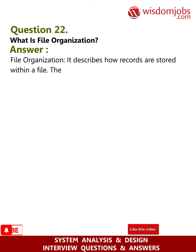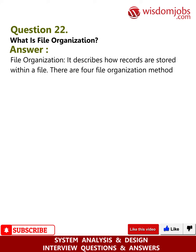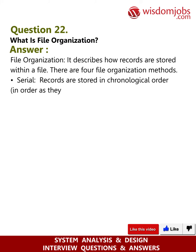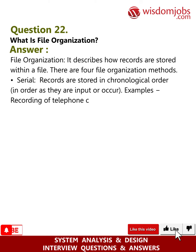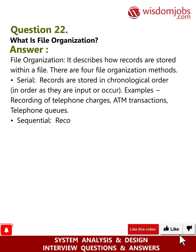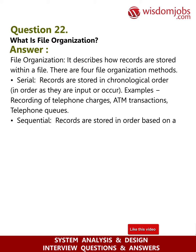Question 22: What is file organization? Answer: File organization describes how records are stored within a file. There are four file organization methods. Serial: records are stored in chronological order as they are input or occur. Examples: recording of telephone charges, ATM transactions, telephone queues.